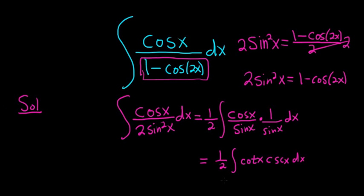And now we got this, right? We're integrating cotangent cosecant. We can ask ourselves, what's a function whose derivative is cosecant cotangent? Well, the derivative of cosecant is negative cosecant cotangent.